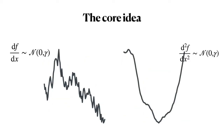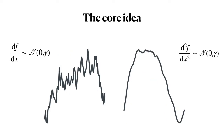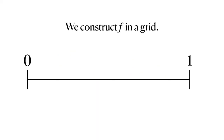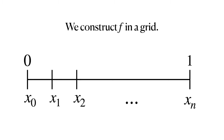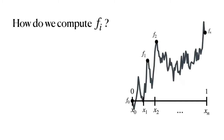We can use these assumptions about the derivative of f to construct an approximation. The idea is to construct f on a grid — say in the interval between 0 and 1 — segmented into n+1 points: x₀, x₁, x₂, all the way up to xₙ. The distance between consecutive points is 1/n, which we call h, and we call our approximation of the function at each point f sub i.